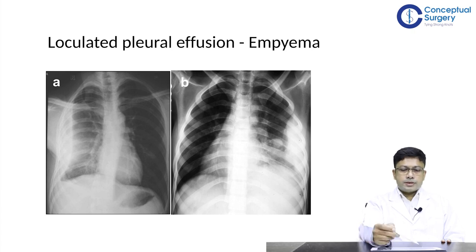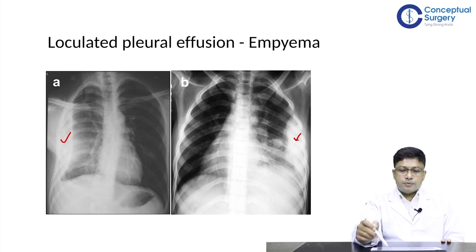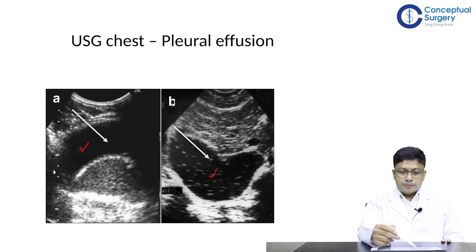These X-rays of two different patients show loculated pleural effusions along the chest wall — typically seen in loculated pleural collections or empyemathorax — which can be drained by placing a catheter under ultrasound guidance. Ultrasound evaluation is essential for proper site marking before inserting a chest tube in these cases. On ultrasound, the pleural effusion appears as a dark anechoic area in the pleural cavity, and one can also visualize the diaphragm and the moving lung.